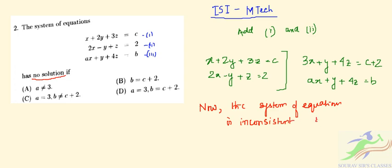The system will be inconsistent if and only if a equals 3 but b is not equal to c plus 2.